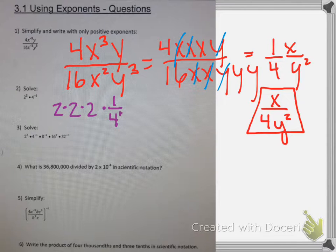So I'm going to split that 2 cubed up into 2 times 2 times 2, and then the 4 to the negative 1 is the same as 1 over 4. So this can be rewritten as 8 over 4, which simplifies to 2.